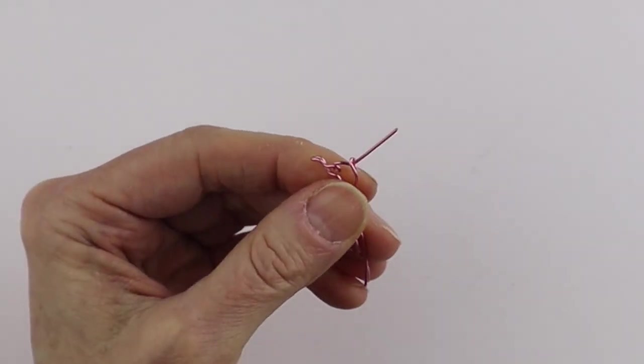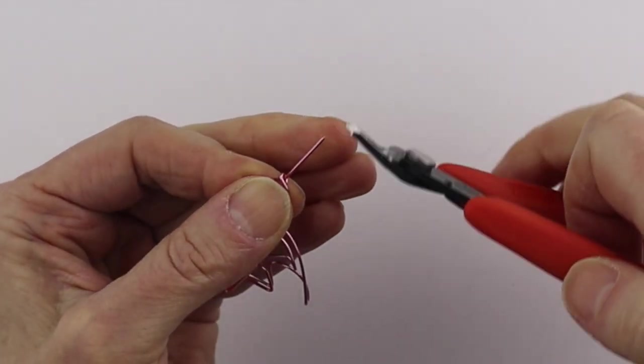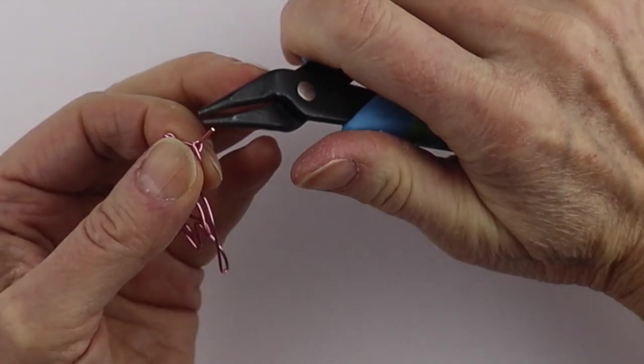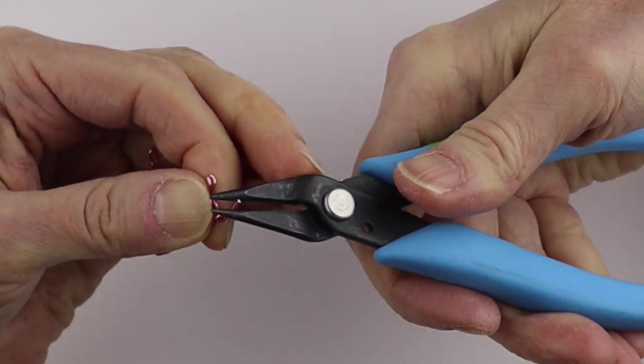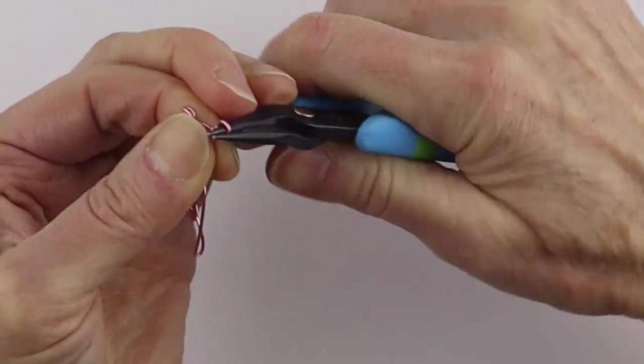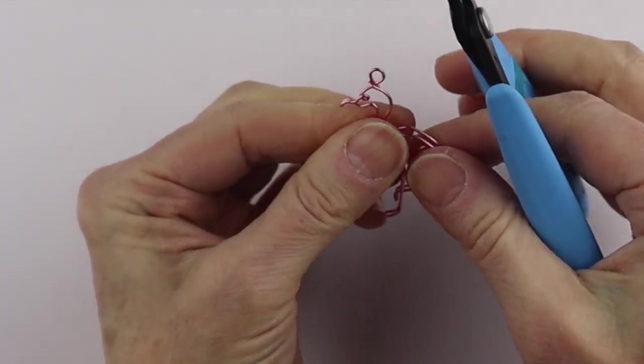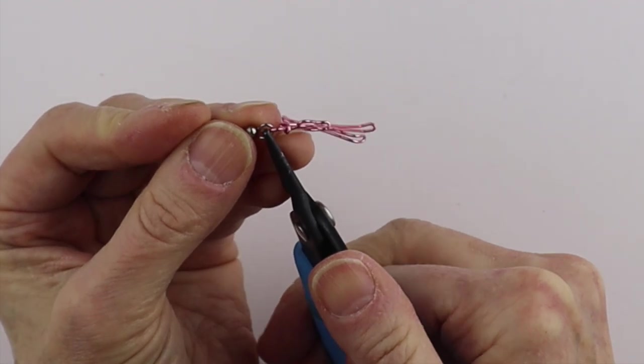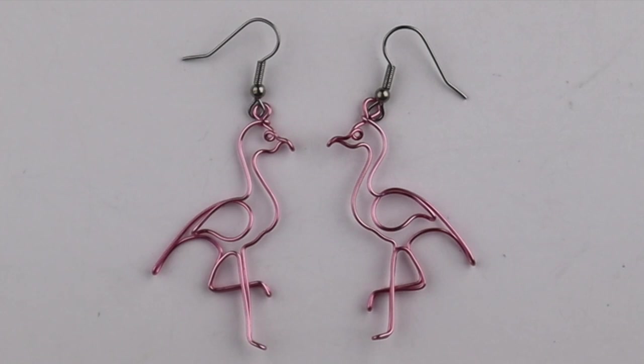Use your flat pliers to push it down. And to make a simple loop at the top, just cut it to 3/8 to half an inch. Take your round pliers, bring it back, hold the end, bring it in. To close that circle, use the flat pliers to flatten it out a bit. I'm just going to take the earring hook. I buy the surgical steel hooks. Close it up. So there you have the finished earrings, and you can see they're pretty well exactly the same size.